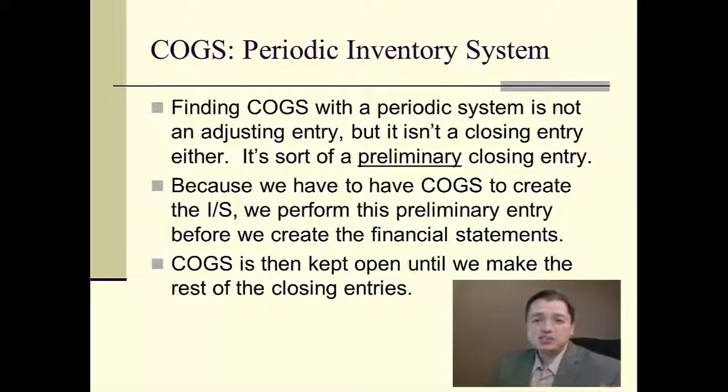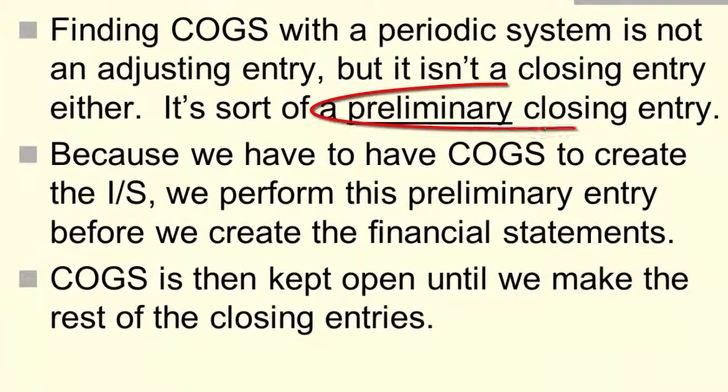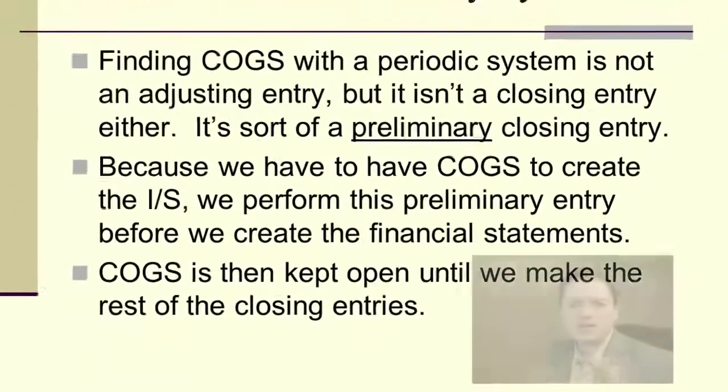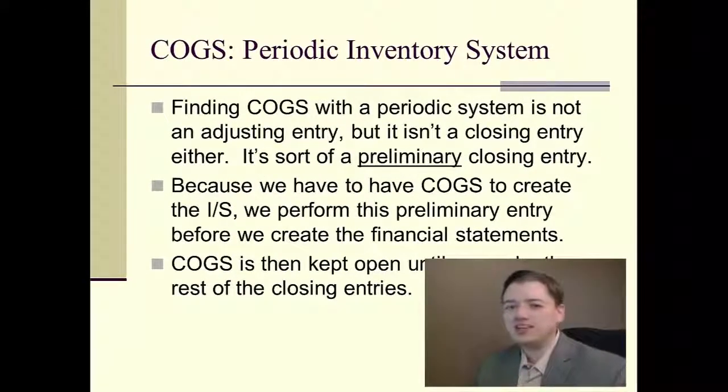So, what is this process? The process is basically taking all those purchases accounts that you use to keep track of the stuff you bought and collapsing them into inventory so that you can then collapse it into cost of goods sold or calculate cost of goods sold. It's not really a closing entry because it's not happening at the end of the period. It's happening after the adjusting entries but before the closing entries. It's kind of a preliminary closing entry. Once we've got that number, we keep cost of goods sold open and we use it through making the financial statements and close it out with the rest of the expenses later.